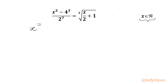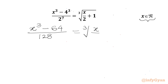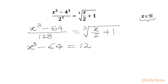I will write the equation: x cubed minus 4 cubed is 64 over 2 to the power 7, which is 128. On the right hand side we will write the cube root of (x over 2 plus 1). Now I will take 128 to the RHS, or multiply both sides by 128. We will get x cubed minus 64 equal to 128 times the cube root of (x over 2 plus 1).